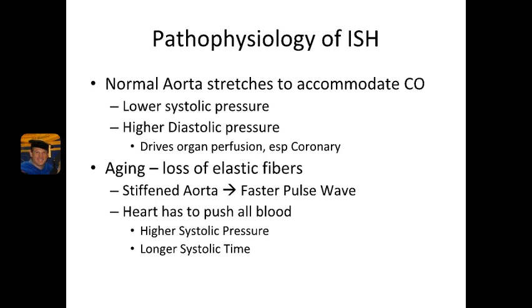As a person ages, they're going to lose elastic fibers, and that is going to result in a stiffening of the aorta. The aorta can no longer stretch to accommodate the cardiac output. Instead, the heart is going to have to generate enough pressure to actually push all of the blood in the entire arterial tree. That's going to result in a much stronger contraction and a much faster pulse wave. A stiffening of the aorta leads to a faster pulse wave of blood being pushed down the arteries — it's called pulse wave velocity.